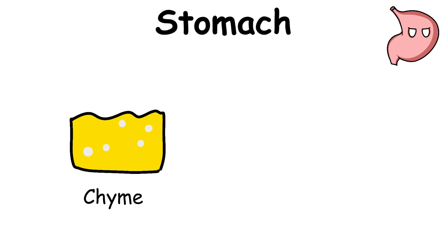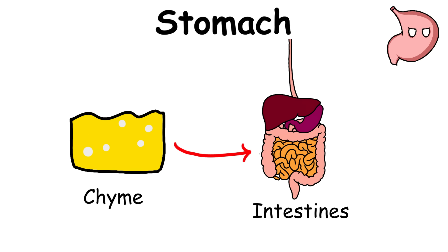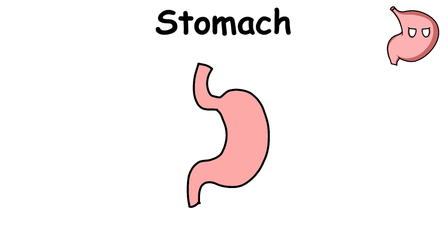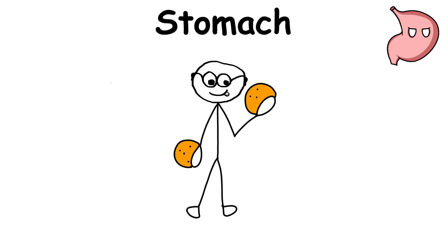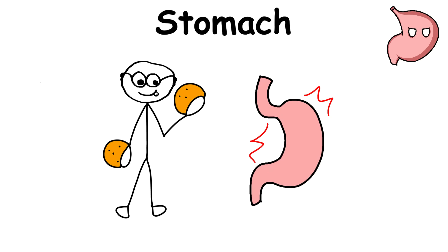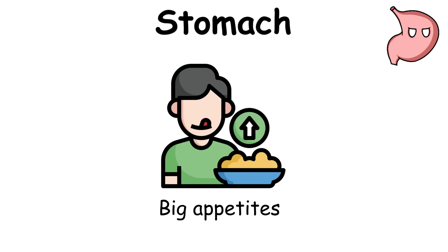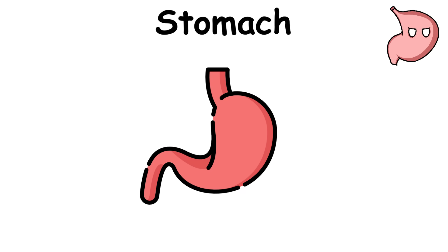The stomach also stores chyme, which is food mixed with stomach liquids. Chyme stays in the stomach until it moves to the intestines. The stomach constantly expands and shrinks depending on the food the person intakes. For example, eating a massive meal in the morning will allow the stomach to expand to accommodate more food later in the day.